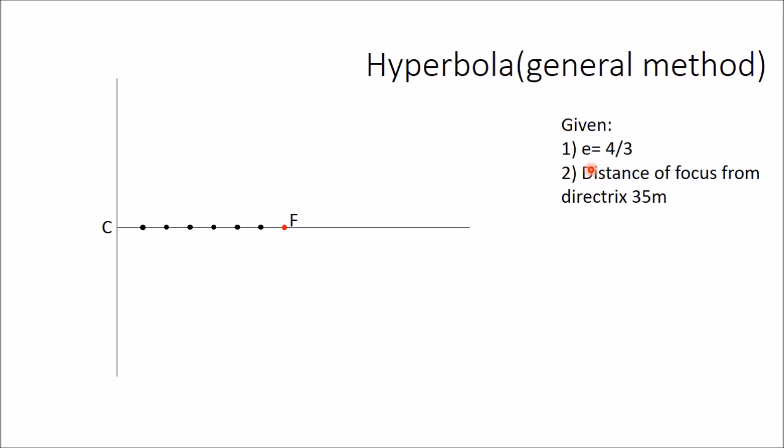Count from F: 1, 2, 3, 4. So this point should be the vertex of the hyperbola. This vertex point lies on the hyperbola because the ratio of the distance of this point from F to C is 4 by 3.